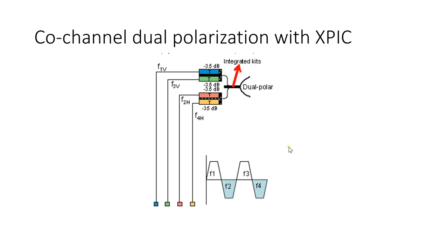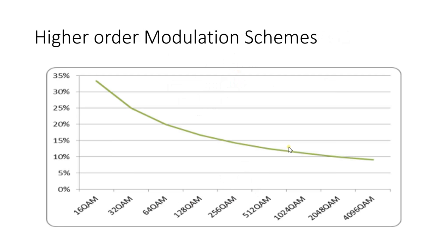Using the CCDP technique combined with XPIC, we have achieved 4+0 capacity. In 4+0, we use two frequencies F1 and F2 — each using two polarizations — giving four channels in one microwave link. Alternatively, we can use four different frequencies F1, F2, F3, and F4 with different polarizations.